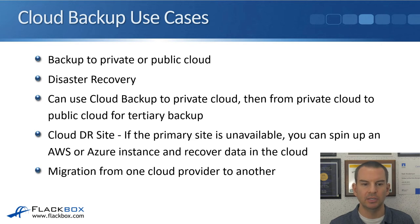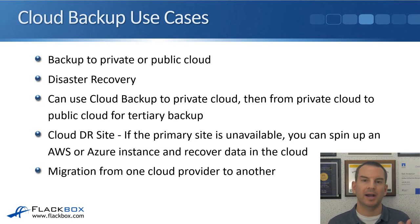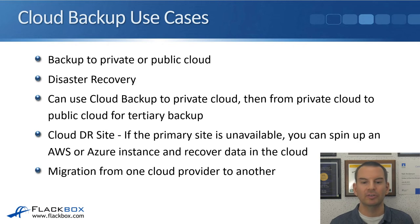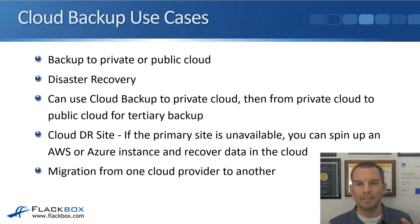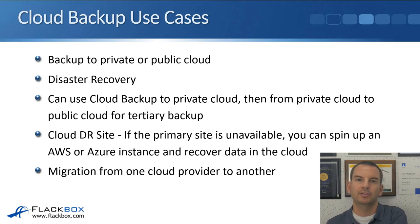The use cases for Cloud Backup: you can use it for backup to private or public cloud — your own object store or pretty much any cloud provider. It's compatible with pretty much any backup solution and SnapMirror, and with pretty much any cloud provider, either private or public. It also provides disaster recovery. You can use Cloud Backup to private cloud and then from private cloud to public cloud for tertiary backup. It's recommended to have three copies of your data: primary data on your storage system, secondary cached on the cloud backup device, and also backed up to your own private object store or off-site to public cloud.